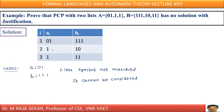Let me form the dominoes first. The first domino has numerator 01 and denominator 111. The second domino has numerator 1 and denominator 10. The third domino has numerator 1 and denominator 11.